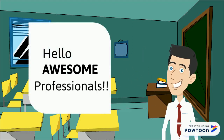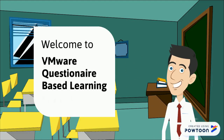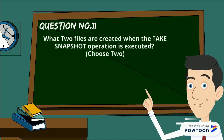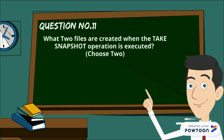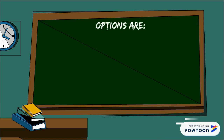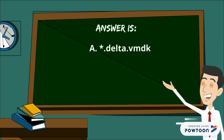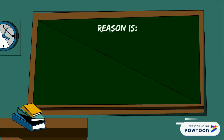Hello awesome professionals, welcome to VMware questionnaire based learning forum. Here is question number 11: what two files are created when the take snapshot operation is executed? Choose two options. Your options are: delta.vmdk, .nvram, .vmss, and .vmsn. The answer is delta.vmdk and .vmsn.